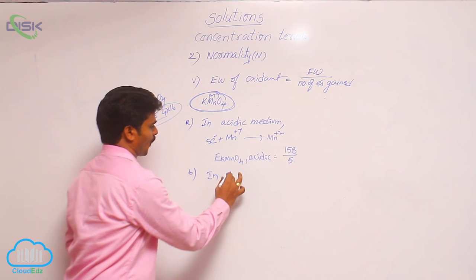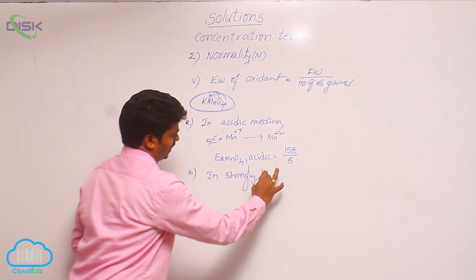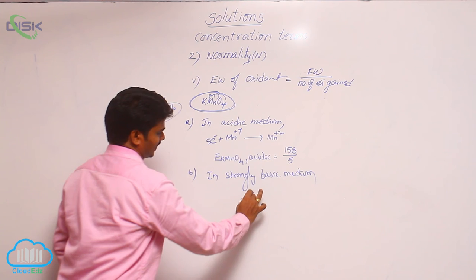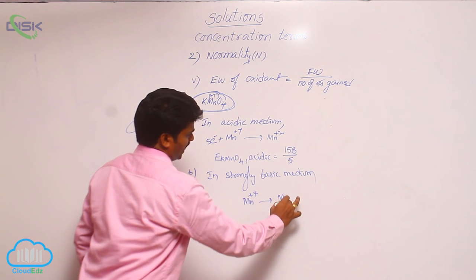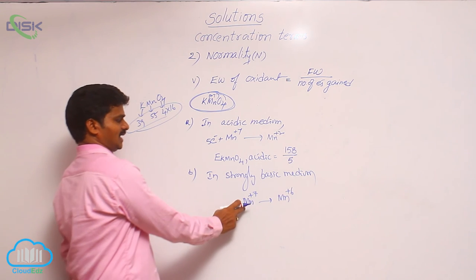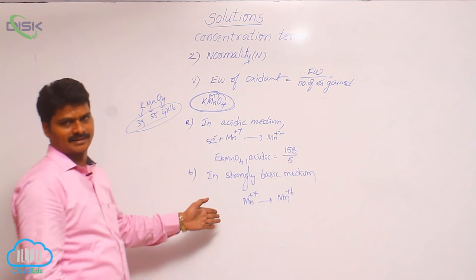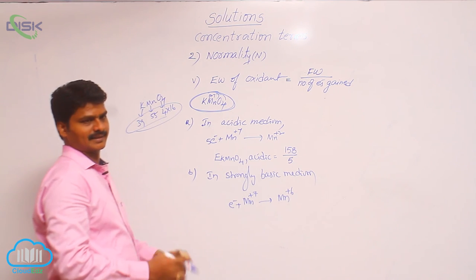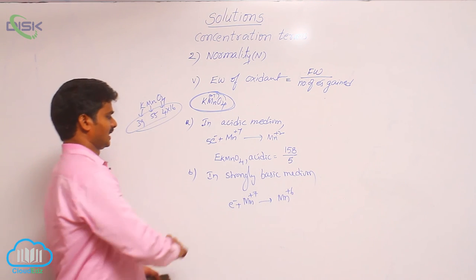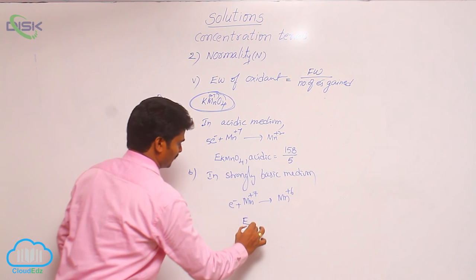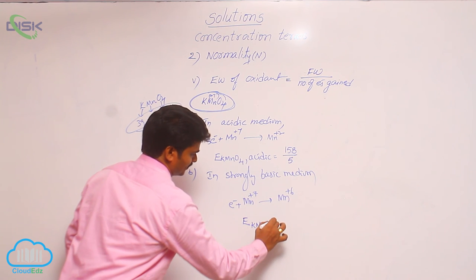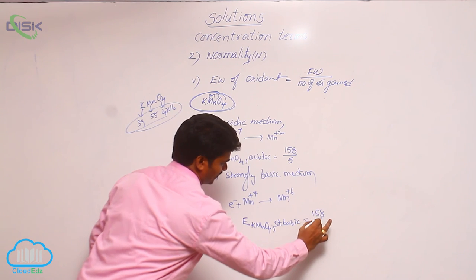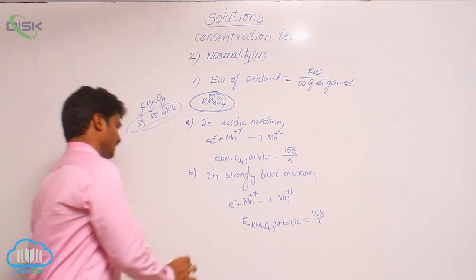Second case: in a strongly alkaline or basic medium, manganese +7 changes to manganese +6. The difference is 1, so 1 electron is picked up. Therefore, equivalent weight of KMnO4 in strongly basic medium = 158 ÷ 1 = 158.